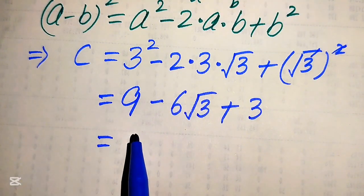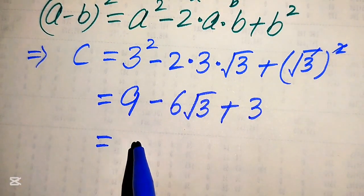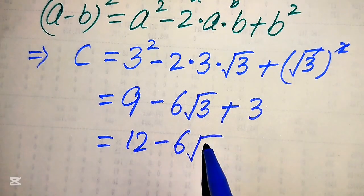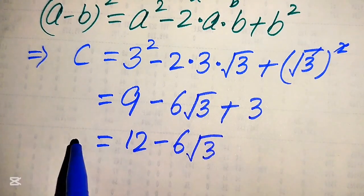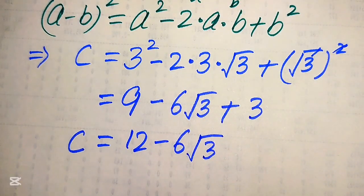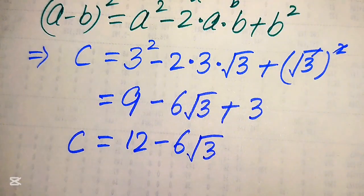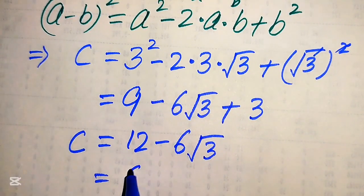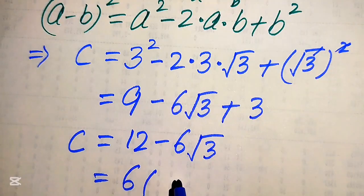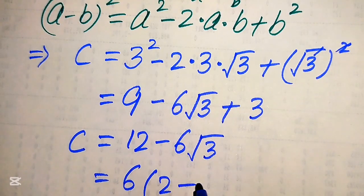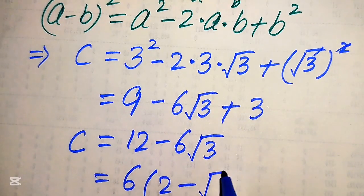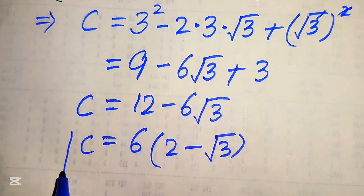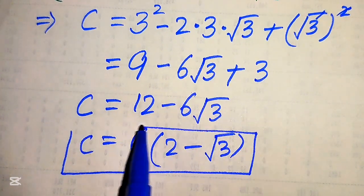In the next step, 3 squared equals 9, and (√3)² equals 3, so 9 plus 3 gives 12. And 2 times 3 times √3 gives 6√3. So c equals 12 minus 6√3. Taking 6 as a common factor, we get c equals 6 times (2 minus square root of 3). This is the final value of c.